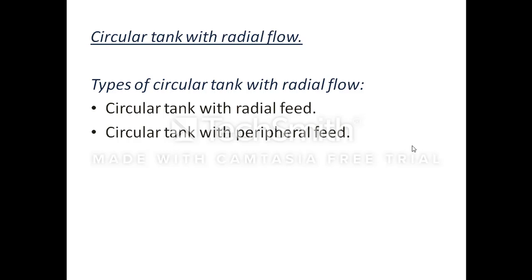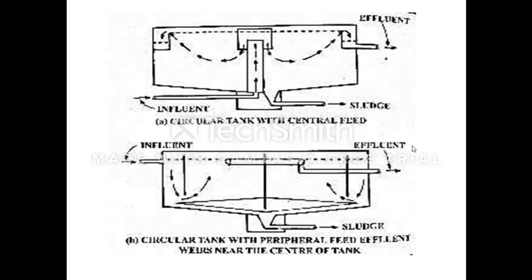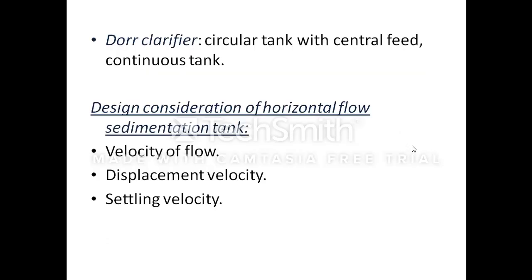The circular tank with radial flow has two types: the circular tank with central feed and the circular tank with peripheral feed. Both are circular in shape, as shown in the figures. In the circular tank with central feed, water enters from the centre and leaves at the periphery. In the circular tank with peripheral feed, water enters from the periphery and leaves at the centre. The Dorr clarifier is a circular continuous flow type tank with central feed.